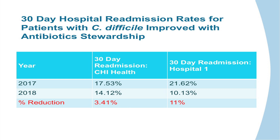At CHI Health, we started a robust antimicrobial stewardship program last July. With the stewardship pharmacist, we review every single patient that gets C. diff in the hospital to make sure they're on the right therapy. Our infection rates have gone down, and our C. diff readmission rates have gone down as well — 3.4% overall for our system and 11% for our academic medical center. Complication rates for these patients have gone down about 4.4%. Antimicrobial stewardship affects not just prescribing, but secondary outcomes like readmissions.